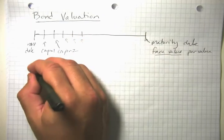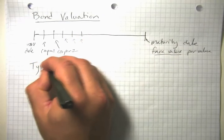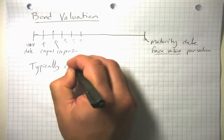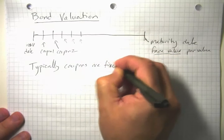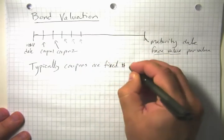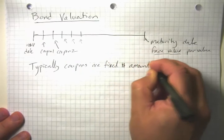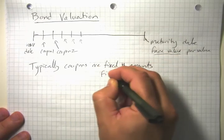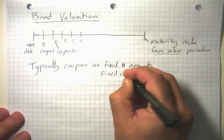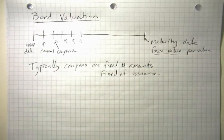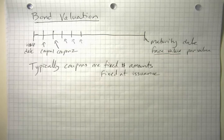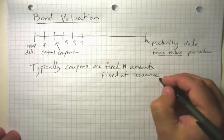Lots of different flows of money happen here. Typically, the coupons are fixed dollar amounts, fixed at time of issuance, and they don't change over the life of the bond. That's not always the case—different bonds work differently—but that's the most common case.